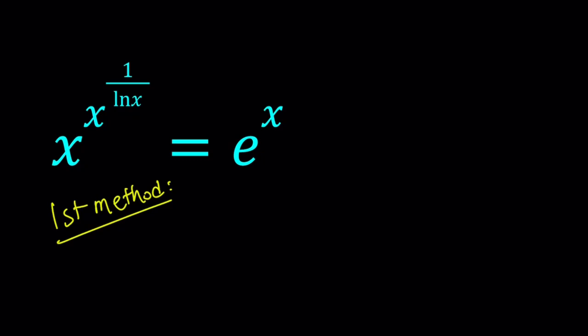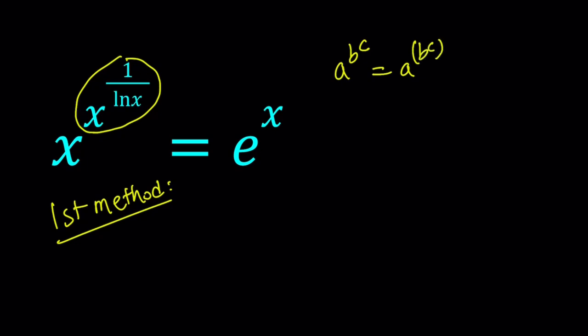For my first method I'm going to start by taking a look at the exponent for the left hand side. The exponent for x is this one. Notice that when you write something like a to the power b to the power c, it's understood to be a to the power (b to the power c), not a to the power bc. If you write it the other way this is basically a to the power bc — you either use parentheses or write it as a to the power bc.